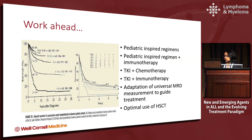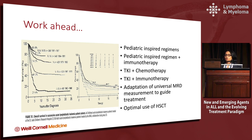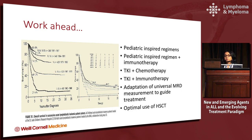In closing, pediatric patients with ALL have seen survival improve from 21% to about 90% over the years, while adults have improved but at an exceedingly slow pace. We hope that pediatric-inspired regimens, TKI-chemotherapy combinations, and immunotherapy combinations will help bridge this gap. Universal MRD measurement to guide treatment and optimal use of stem cell transplant will be essential, and hopefully we'll catch up with our pediatric colleagues.